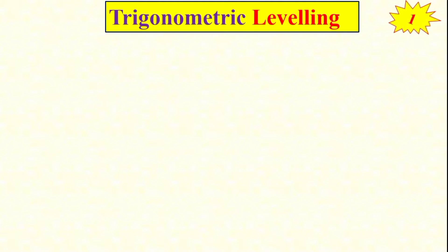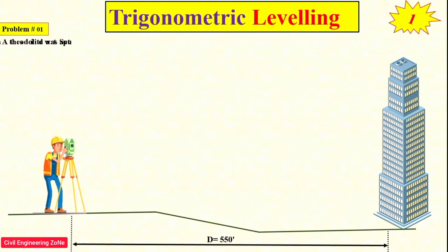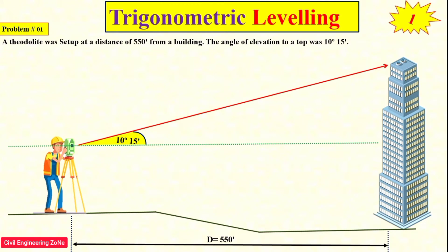Now come to the solution. We have a problem: A theodolite was set up at a distance of 550 feet from the building, and the angle of elevation to the top of the building was 10 degrees and 15 minutes. The elevation of the instrument axis was 3.55 feet, and the reduced level of the instrument station was 850 feet.